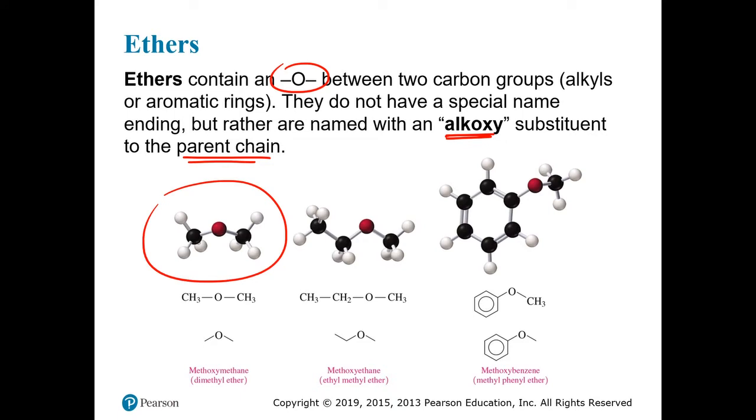For example, in this compound here, we have an oxygen that is bridging two methyl groups. We look at one of the methyl groups and the oxygen itself as being a substituent. This is called methoxy, and it's attached to a one-carbon chain, so to speak, and so that's methane. So, this compound is called methoxymethane.